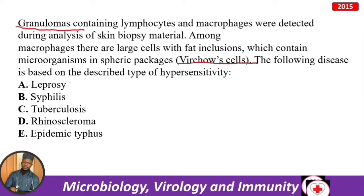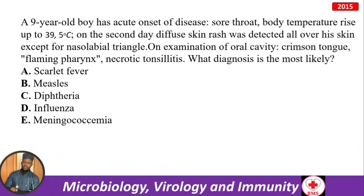A nine-year-old boy has acute onset disease: sore throat, temperature up to 39.5°C; on the second day diffuse skin rash all over except the nasolabial triangle; crimson tongue, flaming pharynx, necrotic tonsillitis. This is scarlet fever. Don't make a mistake — crimson tongue or raspberry tongue is definitely scarlet fever.